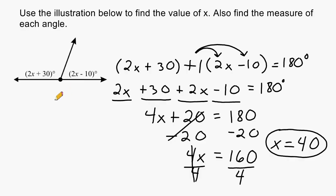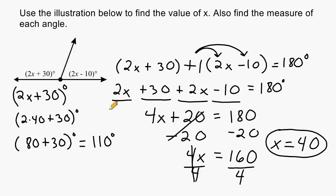Let's start with the obtuse angle. So we are going to write the expression 2x plus 30. And we are going to substitute the value of 40 in for x. First, we multiply 2 times 40 which is 80 and 80 plus 30 is a sum of 110 degrees. So this angle right here is 110 degrees.